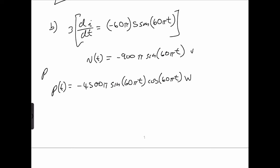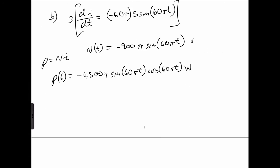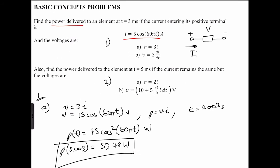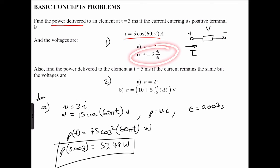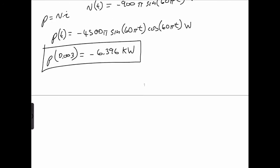So here, basically, what we did was v times i. So equal to negative 6.396 kilowatts. So that is the power delivered to an element when the voltage is this and the current is that, which is three times the derivative of the current, and the current remains the same.